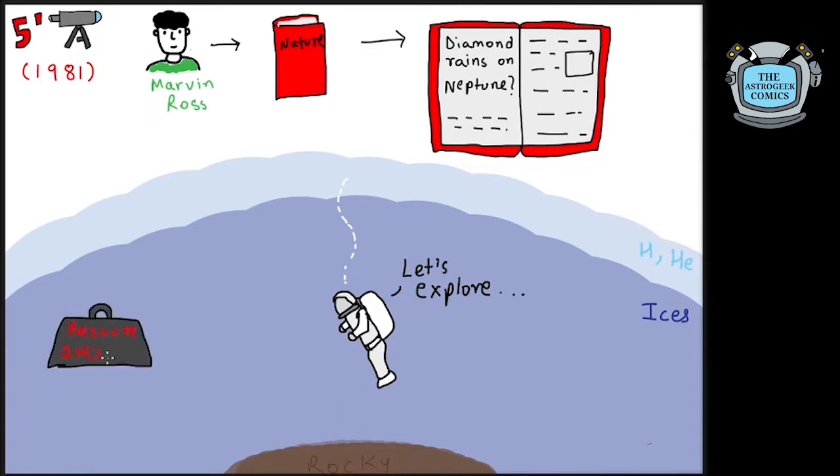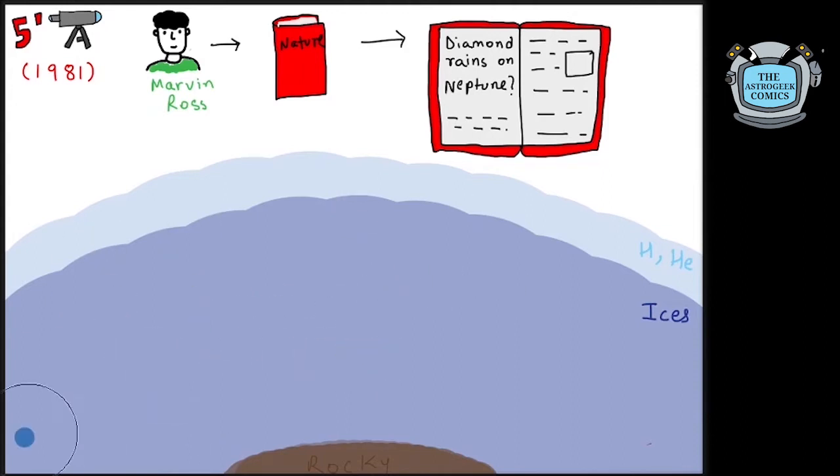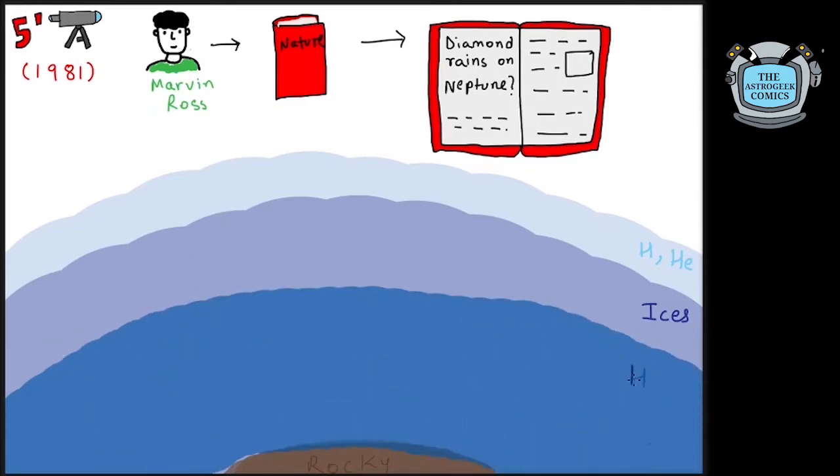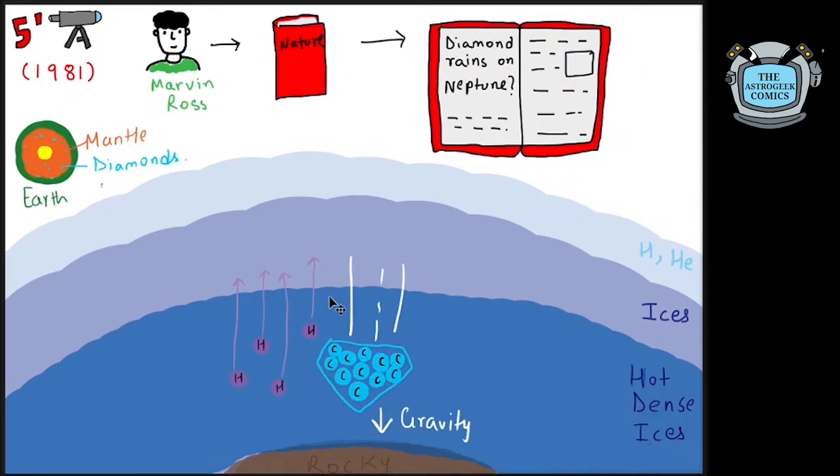The pressure would be a million times than that on Earth and temperatures of 9000 kelvins or more. In this condition, the ices would be compressed into hot dense fluids. This would lead the carbon from methane and other ices to separate out, freeing the hydrogen. The carbon would slowly come together and arrange in crystalline diamond-like structures similar to how diamonds are formed within the Earth's mantle.